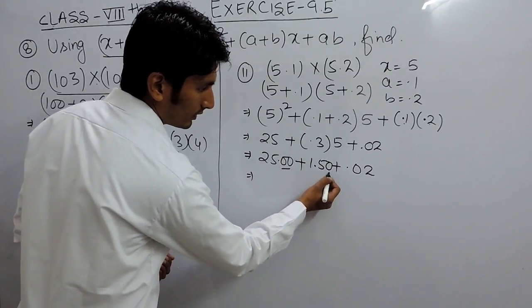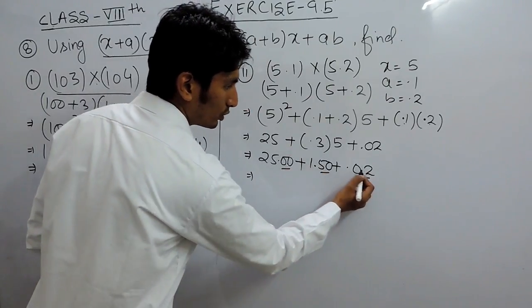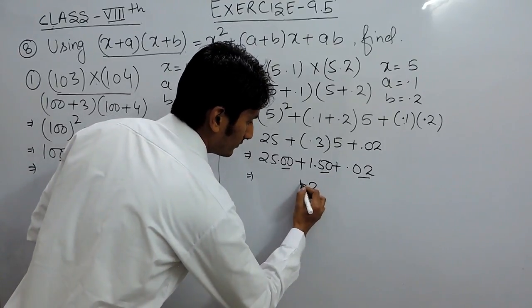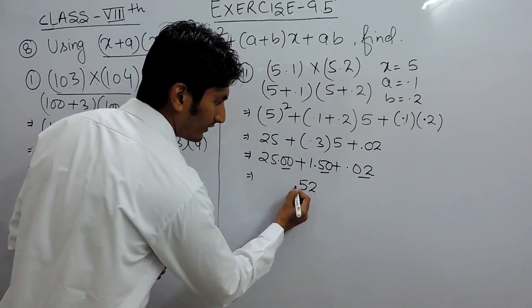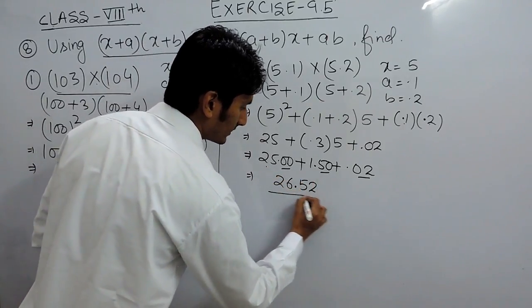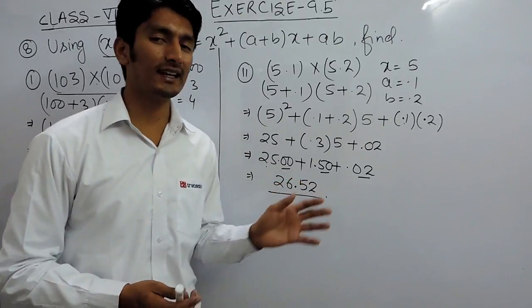So, this is 0 and these can be added. 0, 0, 0, 2 is 2 and 0, 5, 0 is 5. So, this will become 50.52 and 25 plus 1 is 26. So, 26.52 should be the answer for this second part.